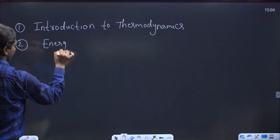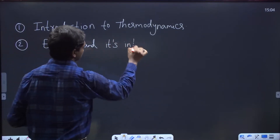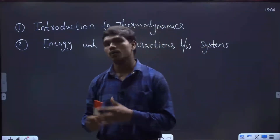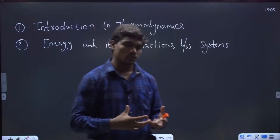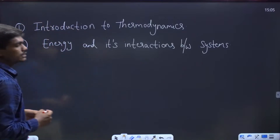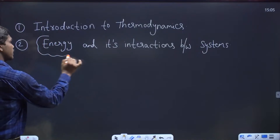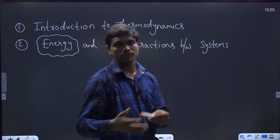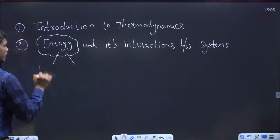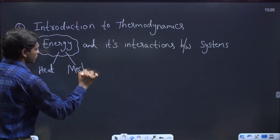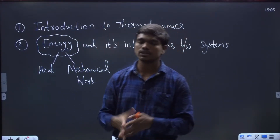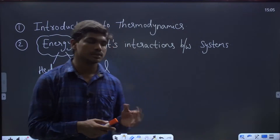The second chapter is about energy and its interactions between systems. We'll see what are the different thermodynamic phenomena that happen when you provide some energy to a system or take some energy out from the system. There are many forms of energy like heat energy, mechanical energy, potential energy, electric energy, and magnetic energy, but our main focus is on heat and mechanical work. We'll see different heat interactions and work interactions for different processes.